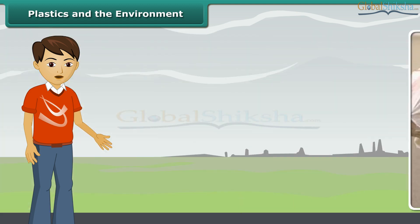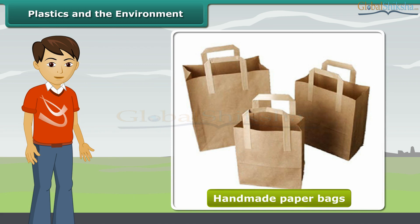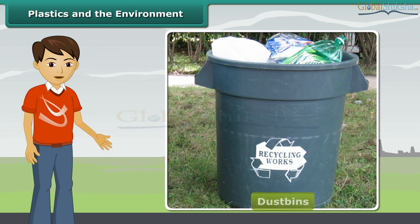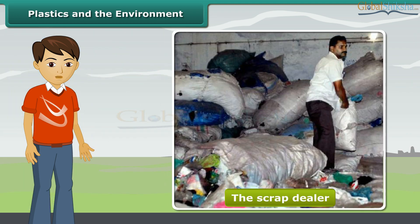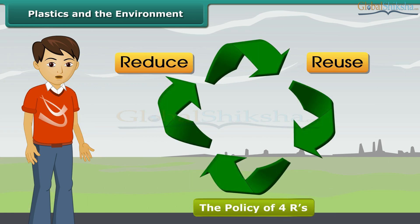We can replace plastic shopping bags with jute bags or handmade paper bags. Instead of littering everywhere, particularly on roads, we should put the plastic objects in the dust bins marked as non-biodegradable, thus segregating them from the biodegradable wastes. Sell plastic scraps to the scrap dealer for recycling. Adopt the policy of 4 R's which is reduce, reuse, recycle and recover.